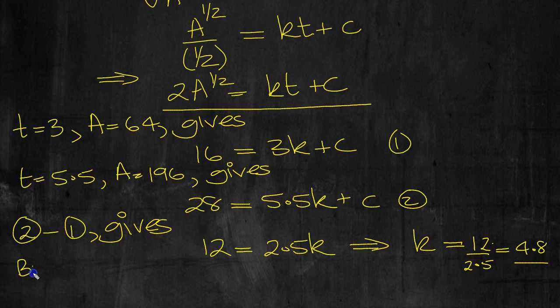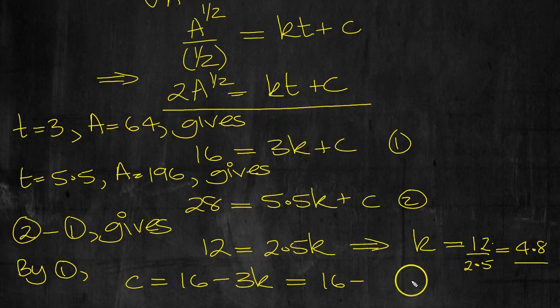By 1 then. C is equal to 16 minus 3K. OK, it's 16 minus 3 times 4.8. 3 fours are 12. 14.4 that works out as. Again, tap it in the calculator if you need to. So C is 1.6.